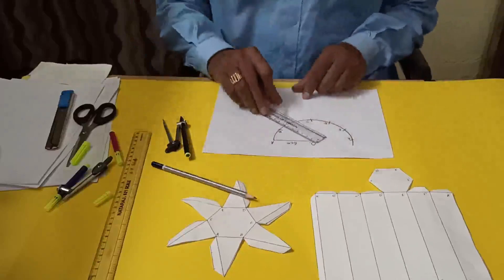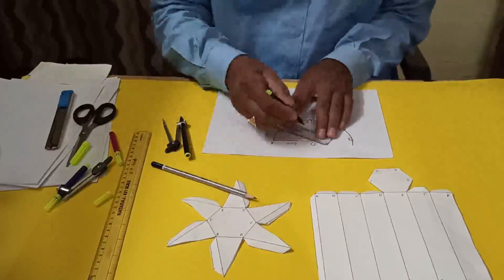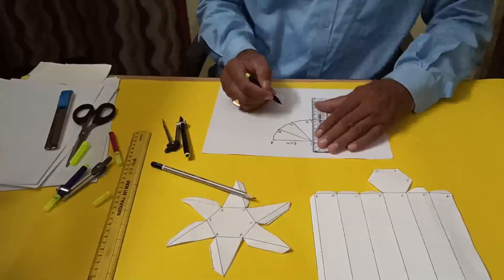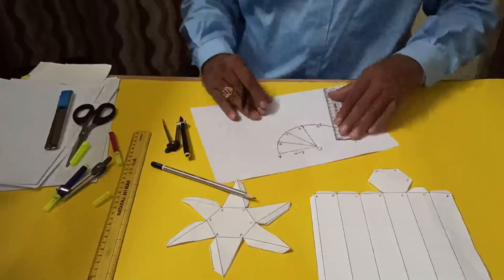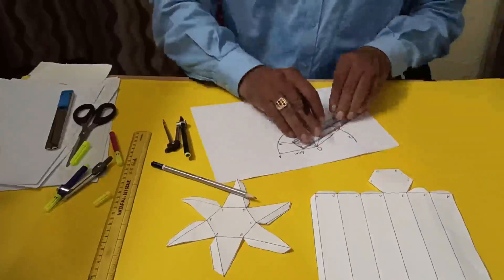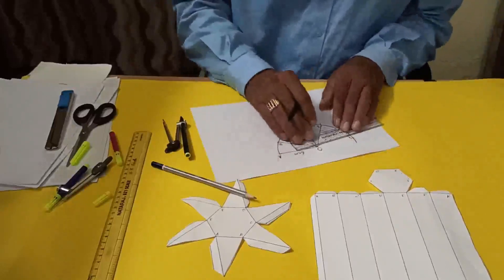Now we have to join O-B, O-C, O-D, O-E, O-F, and O-A. Point A and A are the same.